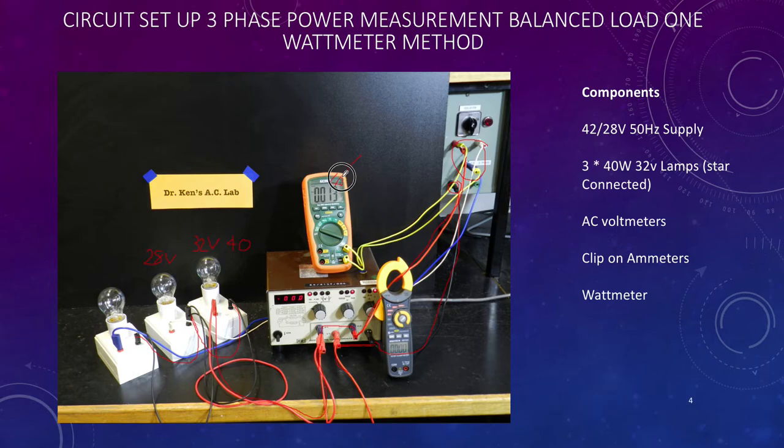We should get a line voltage, sorry phase voltage, somewhere in the order of about 28 volts. We'll see when we turn it on. So we're measuring our voltage externally, we're measuring our current here on the clip-on ammeter externally, plus we have a wattmeter also measuring. What we're going to do is compare what we get on our voltmeter and our ammeter with what gets displayed on our wattmeter. So that's the purpose of the exercise.